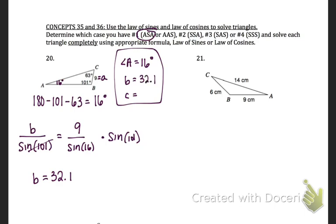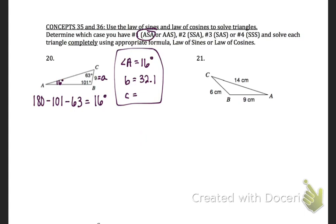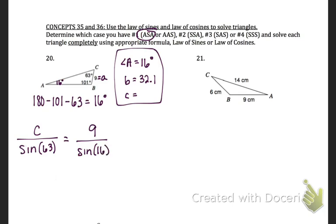To find side C, we do the same thing. We set up law of sines with side C on top over sine of angle C (63 degrees), equals side a (9) over sine of angle A (16). Multiplying over the sine of 63, we get 29.1.